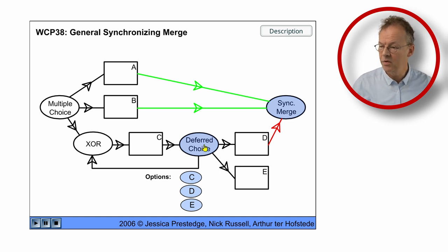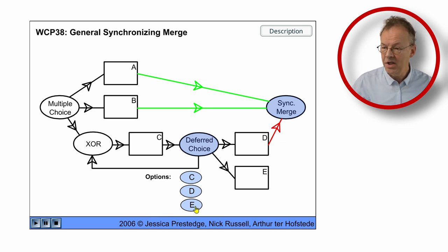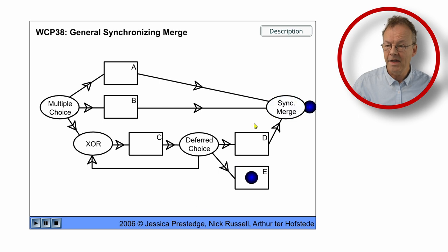One thing we can do is we can go back to the XOR join here. So we choose C and we can complete C again. So we have this loop or we can go out at E and then immediately the synchronizing merge fires.